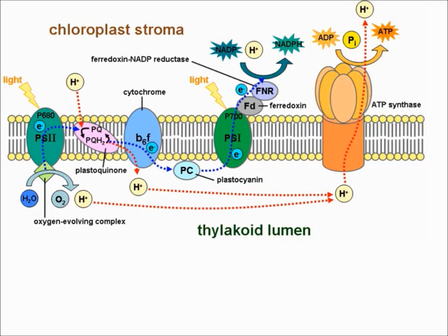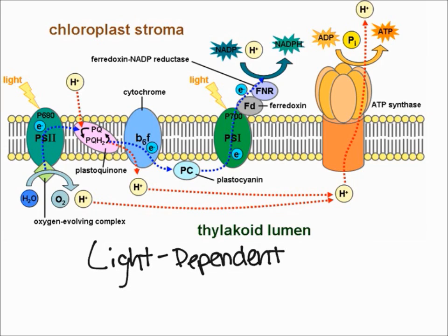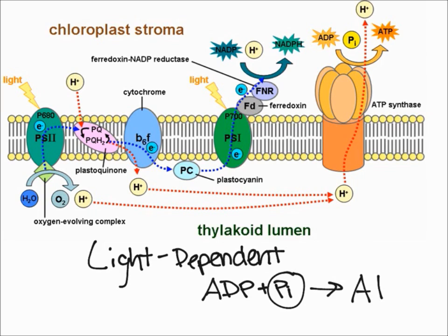In this video, I'm going to describe the light reactions of photosynthesis. These reactions are light-dependent, which means they require light for the whole process to occur. The whole purpose of this process is to turn ADP and a phosphate group into ATP. Using light to produce ATP is called photophosphorylation.